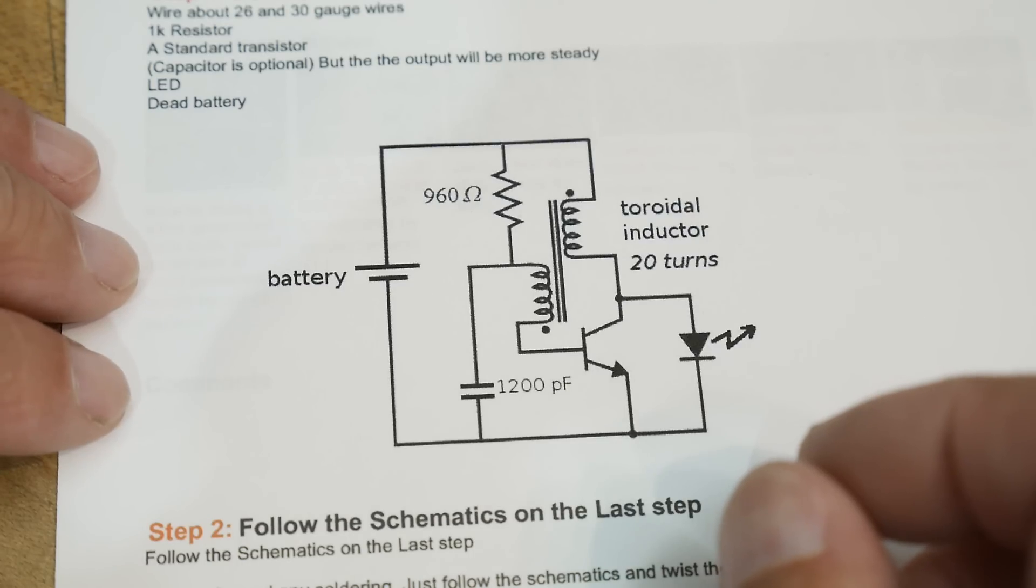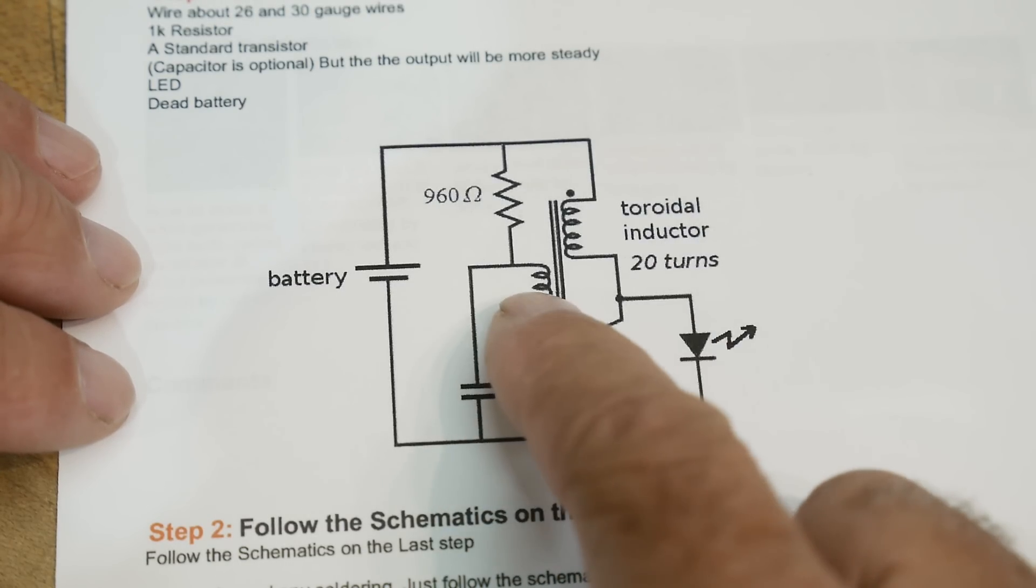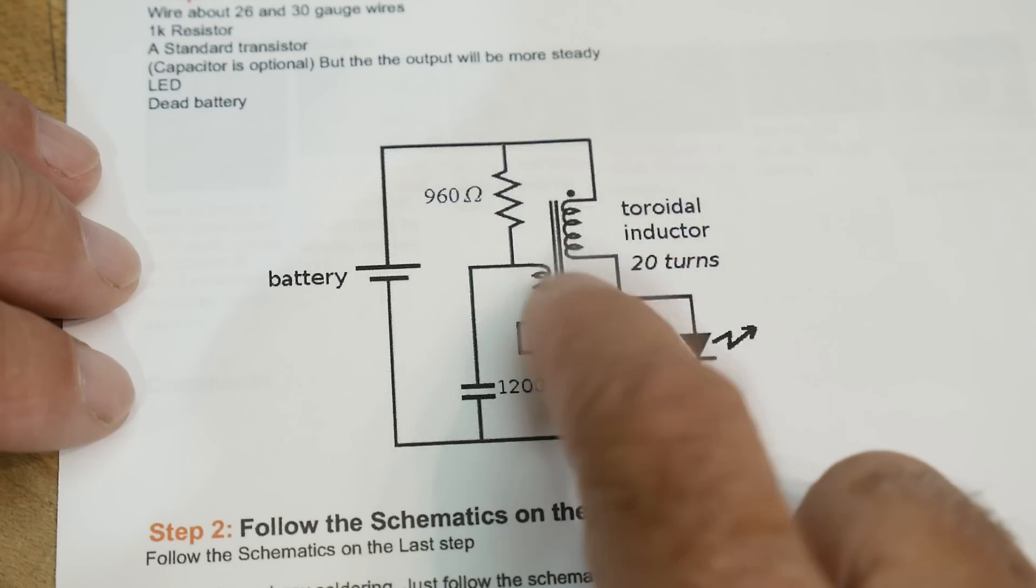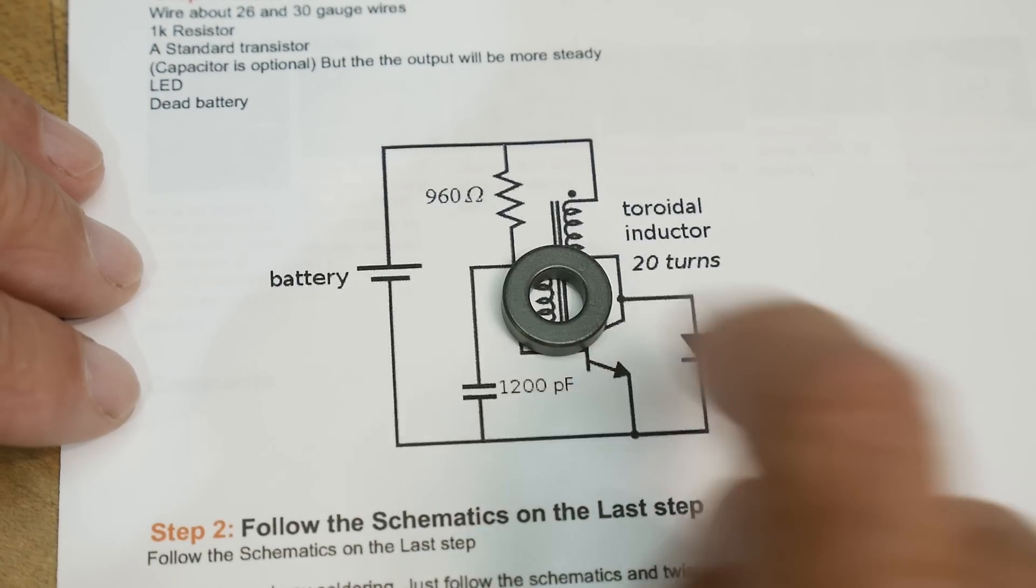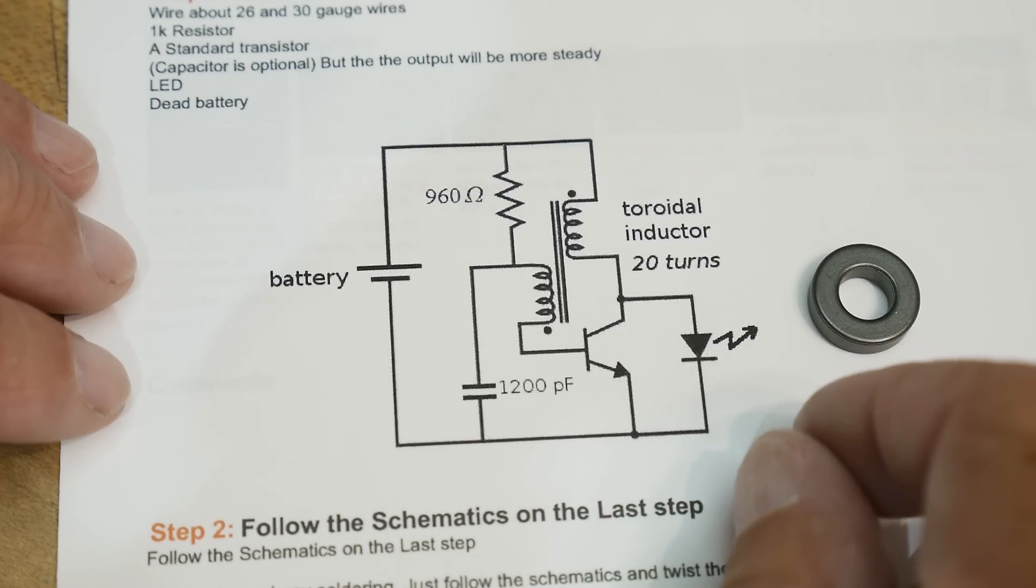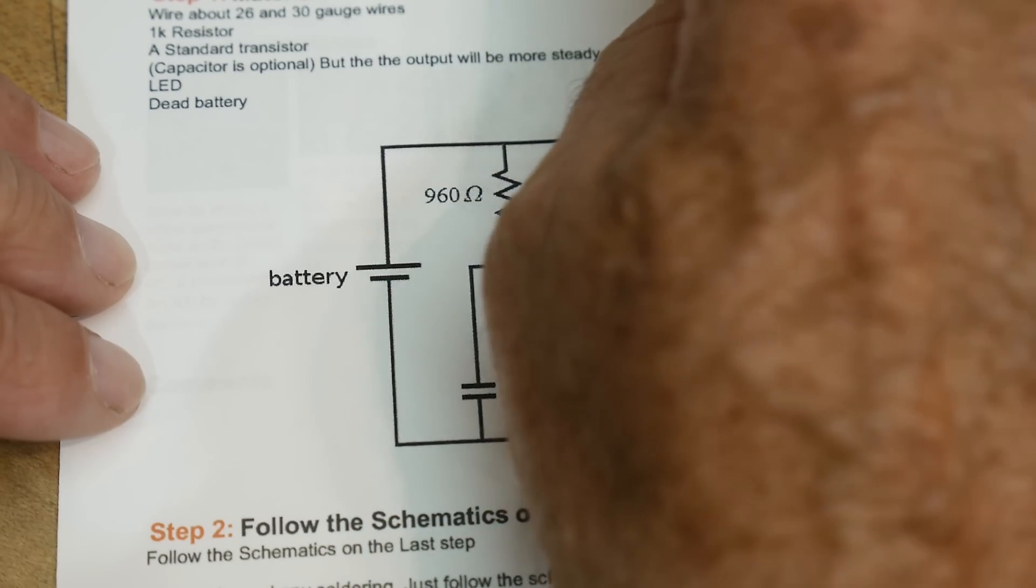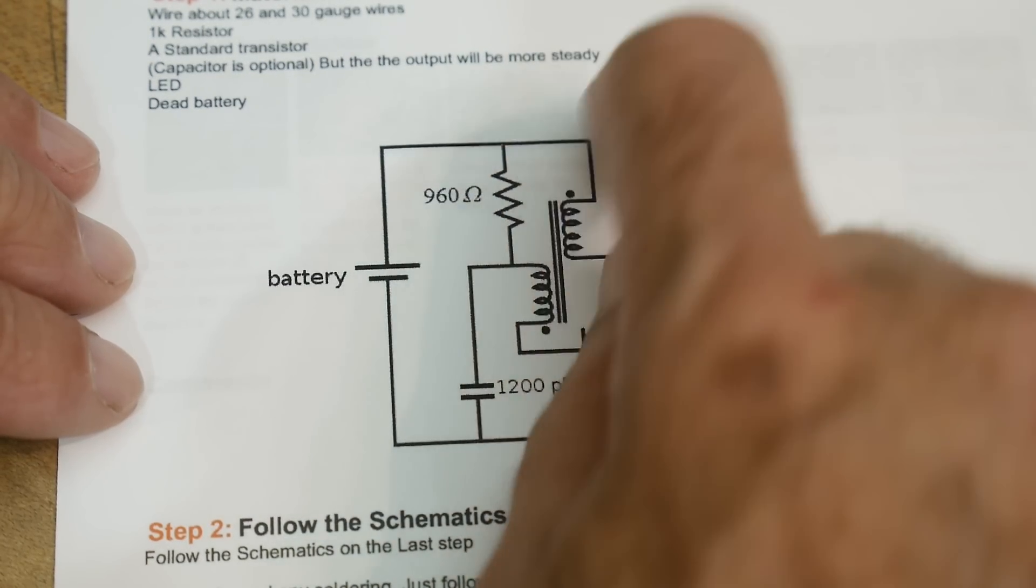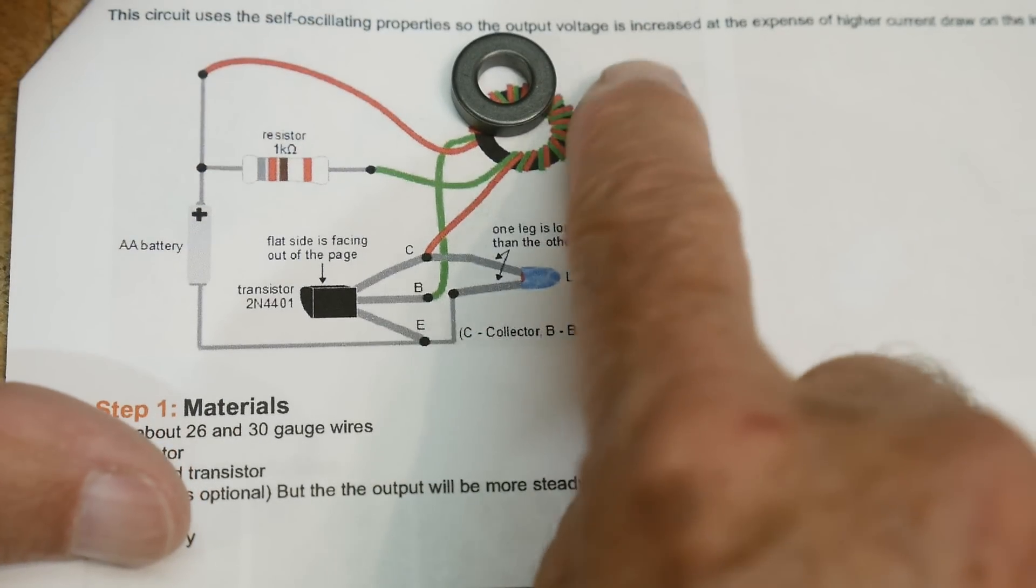Let's build one of these. The instructions say to make 20 turns on a ferrite core. So I'm going to use this little guy here. Let's see if we can get 20 turns on him. And yeah, look at that. It's about 1 to 1 over here. This is the circuit.